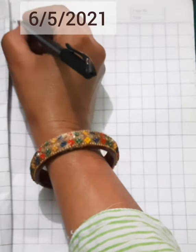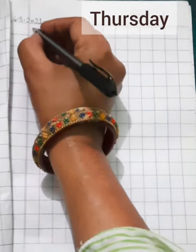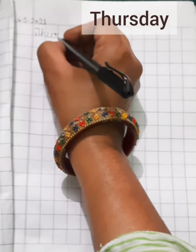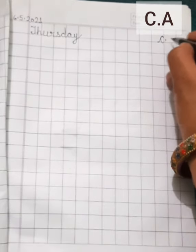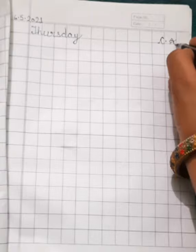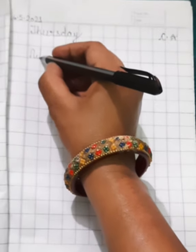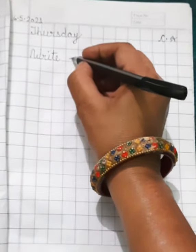What is the date today? 6 May 2021. And what is the day? Thursday, T-H-U-R-S-D-A-Y. You will write here C.A., it means class assignments.